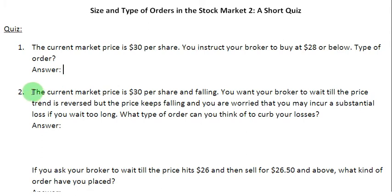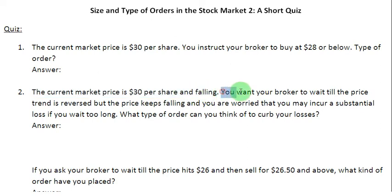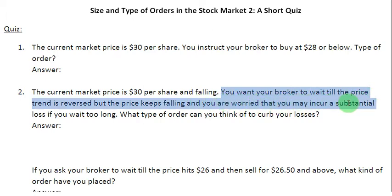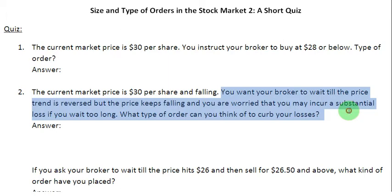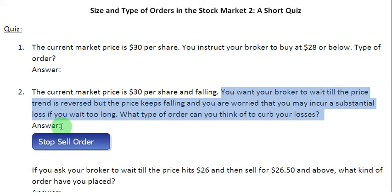Question number two: the current market price is $30 per share and is falling. What you want is for your broker to wait till the price trend is reversed, but the price keeps falling and you are worried that you may incur a substantial loss if you wait too long. What type of order can you think of to curb your losses? Since you want to curb your losses, the obvious answer is to place a stop sell order with your broker.